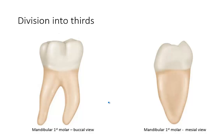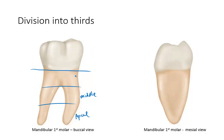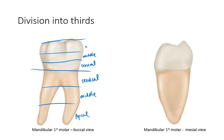Teeth are divided into thirds. That way when we start talking about things like contact points, we can accurately describe where the contact point is. We divide the crown and the root separately. Starting with the root: the third containing the apex is the apical third, the middle one is the middle third, and the part closest to the CEJ is the cervical third. For the crown: the part closest to the CEJ is the cervical third, the middle is the middle third, and the part containing the occlusal surface is the occlusal third.